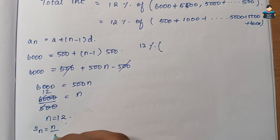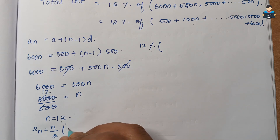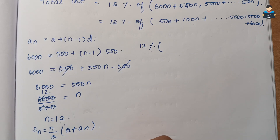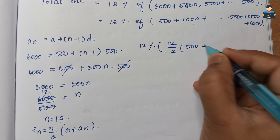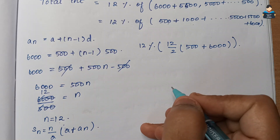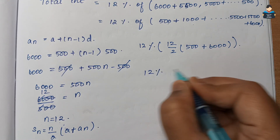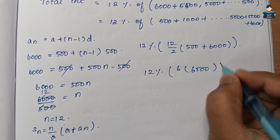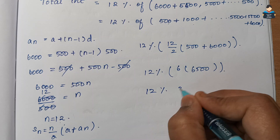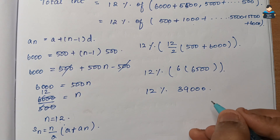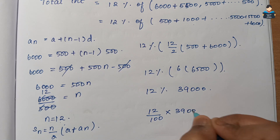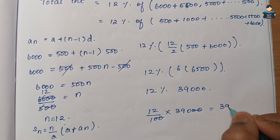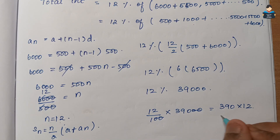Using Sₙ = n/2 × (a + aₙ): Sₙ = 12/2 × (500 + 6,000) = 6 × 6,500 = 39,000. Then 12% interest = 12/100 × 39,000 = 390 × 12 = 4,680. So the total interest paid is rupees 4,680.